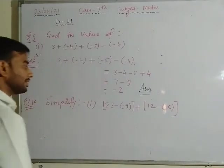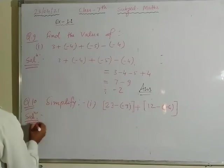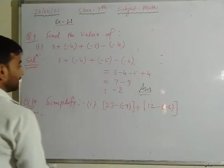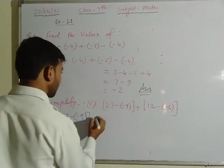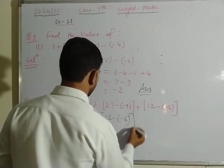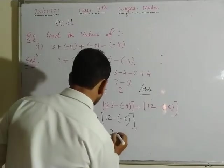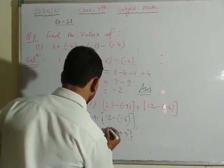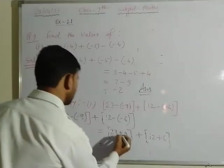This is the question — we need to simplify it. The simplification: 23 minus minus 9 plus 12 minus minus 6. Applying sign rules: minus minus gives plus. So we get 23 plus 9, and 12 plus 6.